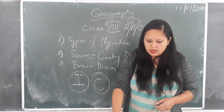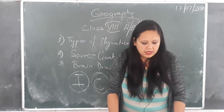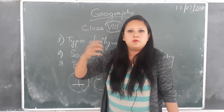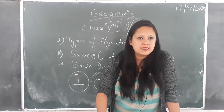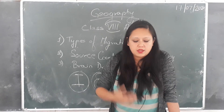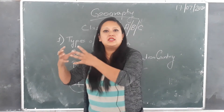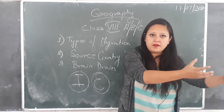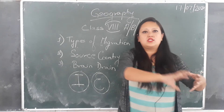The next type is intercontinental migration. When a person migrates from one continent to another, it is known as intercontinental migration. There are continents like Asia, Africa, America, Australia, and Antarctica. For example, if a person migrates from India, which is in Asia, to any European country, America, Africa, or Australia, that means you are migrating from one continent to another.